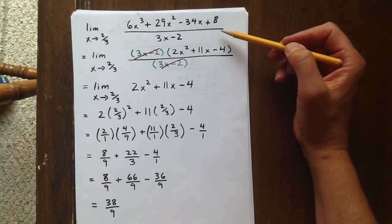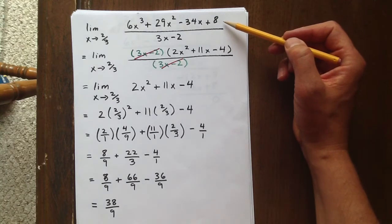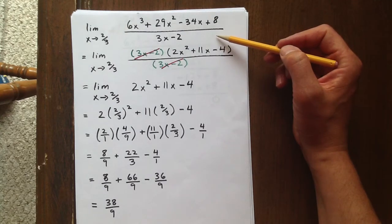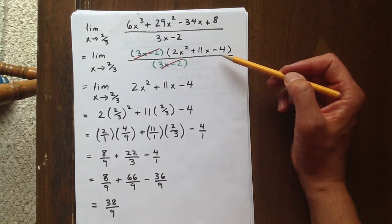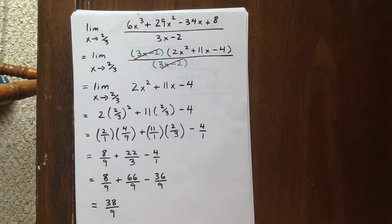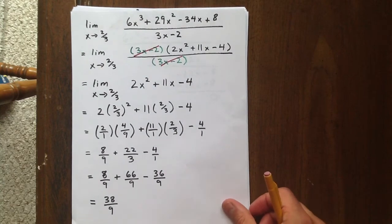In this question, we want to find the limit as x goes to two-thirds of a cubic over a linear expression. Well, substituting an x value of two-thirds in for x gives the indeterminate form of zero over zero. So what we're going to have to do is a little bit of simplifying.